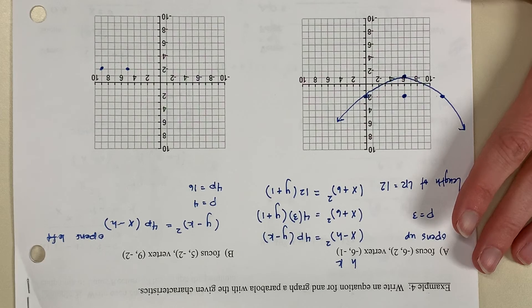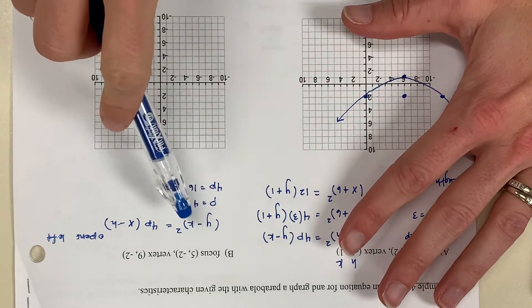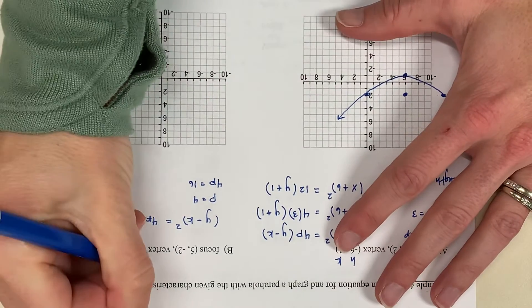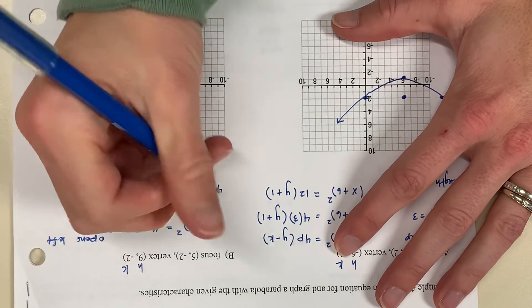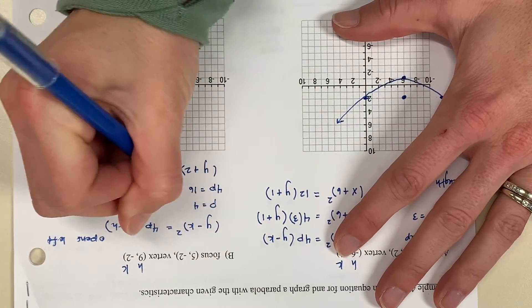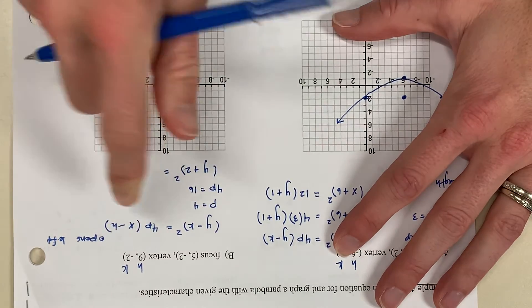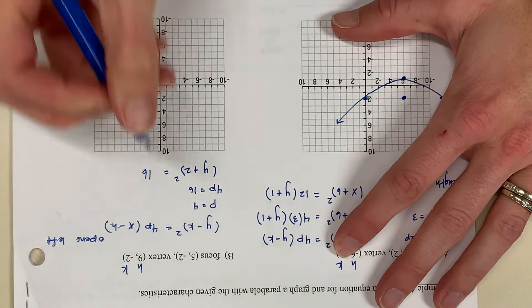Now if we plug all of this into the equation, I have y minus k first. Vertex, recall, is hk. Your k value is negative 2. So this becomes y plus 2 quantity squared equal to 4p is 16.